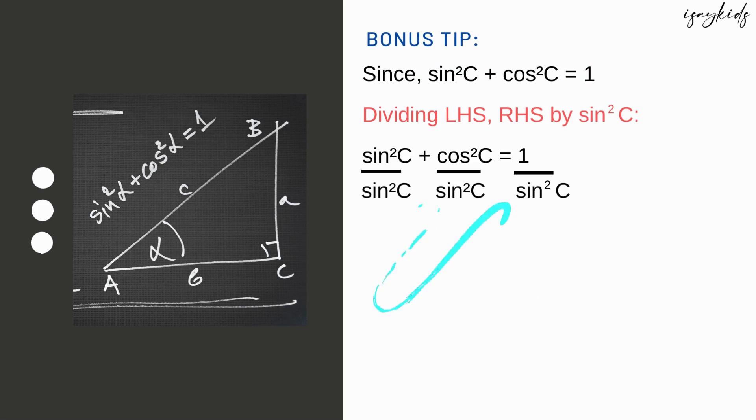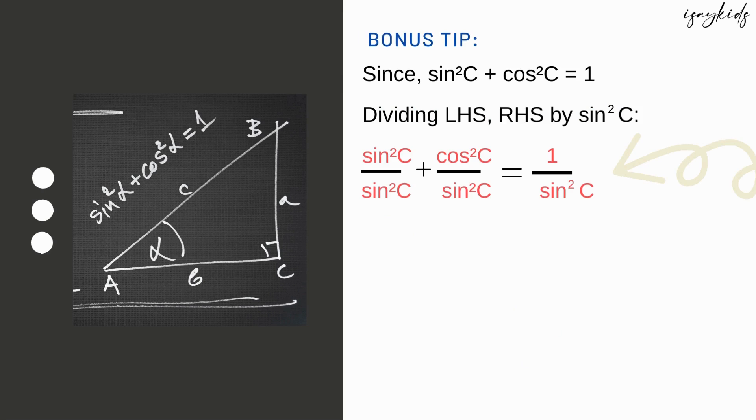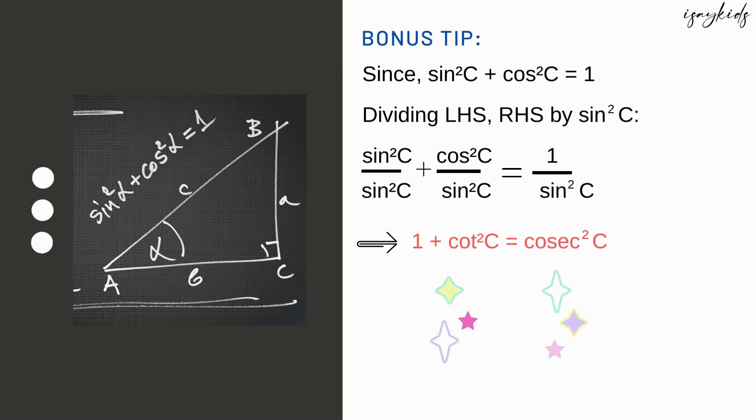Let's divide both left hand side and right hand side by sin²C. We get sin²C/sin²C + cos²C/sin²C = 1/sin²C. That means 1 + cot²C = cosec²C. This is our second identity.